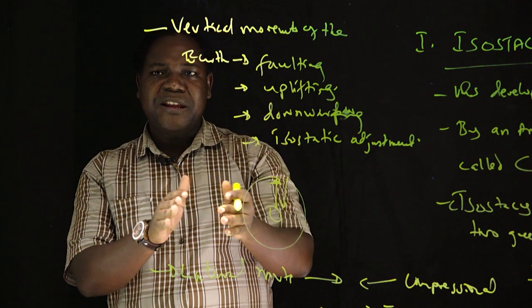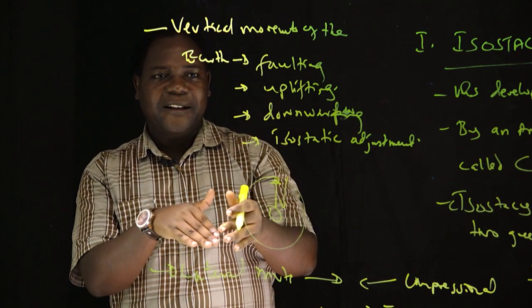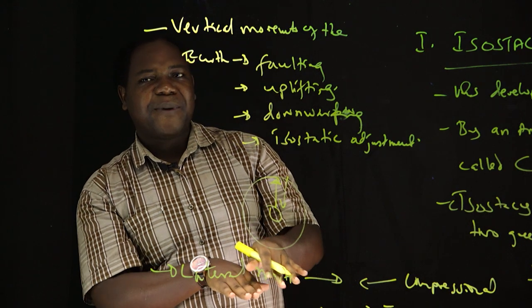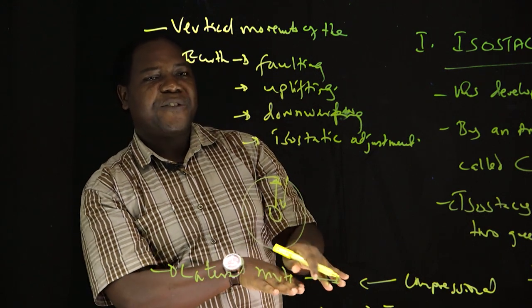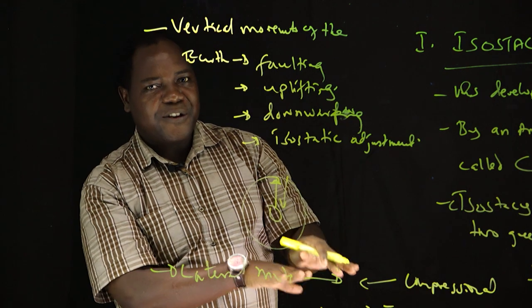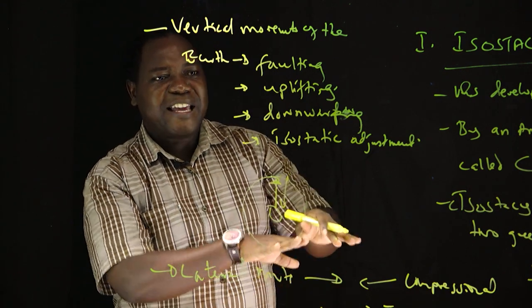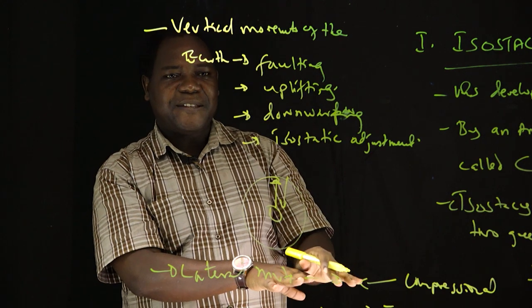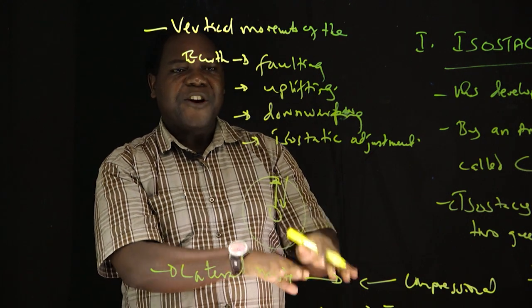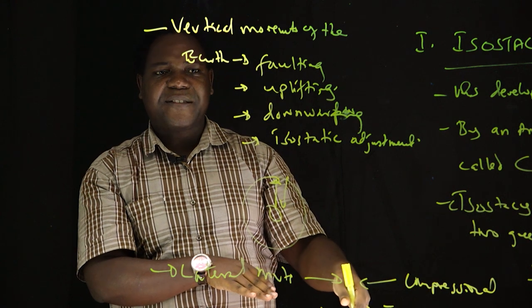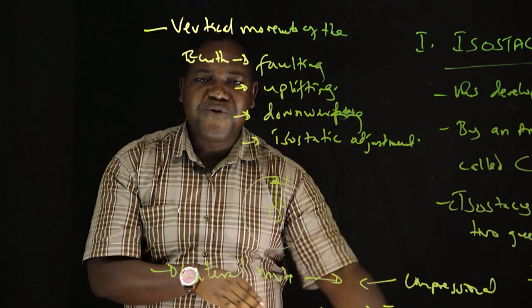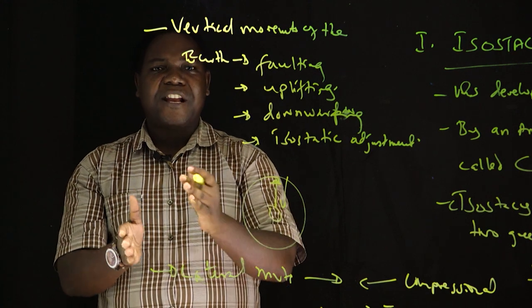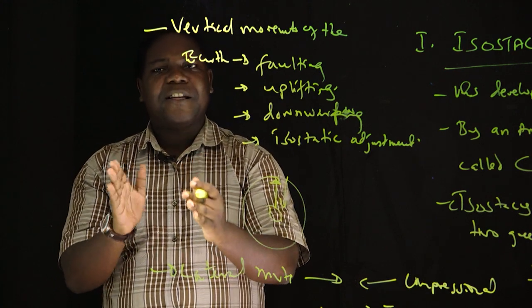Deposition — either by wind, by water, or by glacier — takes place from the highlands to the lowlands. The materials are always deposited on the lowlands. As they are deposited, they lead to the increase of weight on the lower parts. The same increase disturbs the balance, compresses the molten materials within the earth's surface, and the materials move to different directions so that they can bring back the lost balance.